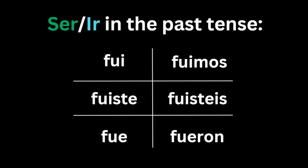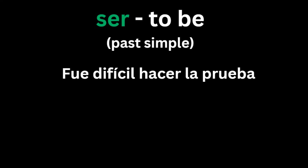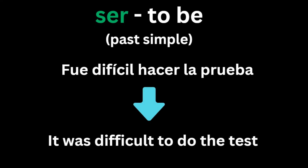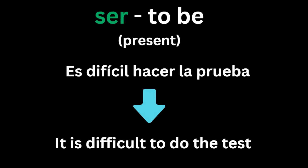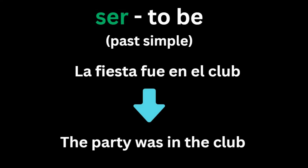Fue is by far the most common use of ser, used for the construction it was, like saying fue difícil hacer la prueba, it was difficult to do the test, which can be said the same in the present tense by simply changing one word: es difícil hacer la prueba. You can also have simpler sentences, like la fiesta fue en el club, meaning the party was in the club, which is the easiest sentence that shows how ser is used perfectly and logically in the past as an event that took place and stayed in the past.